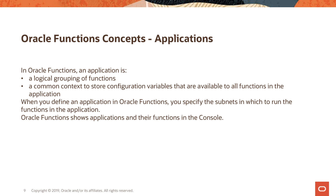The first core concept in Functions is called applications. An application is essentially a logical grouping of functions. You can create an application in the OCI console in the Oracle Functions section, and you do that before you can deploy any function. An application does not need to contain any function, but it provides a common context to store configuration variables available to all functions within that application.